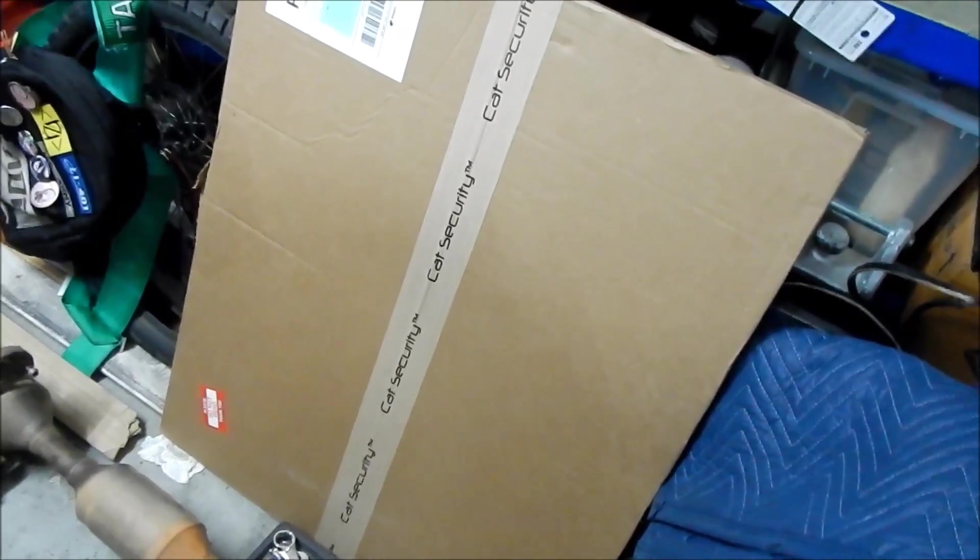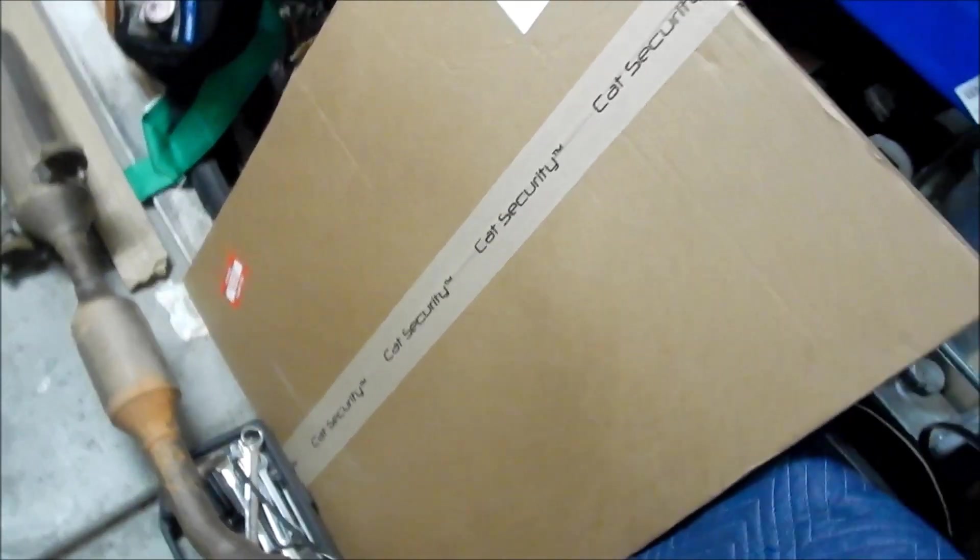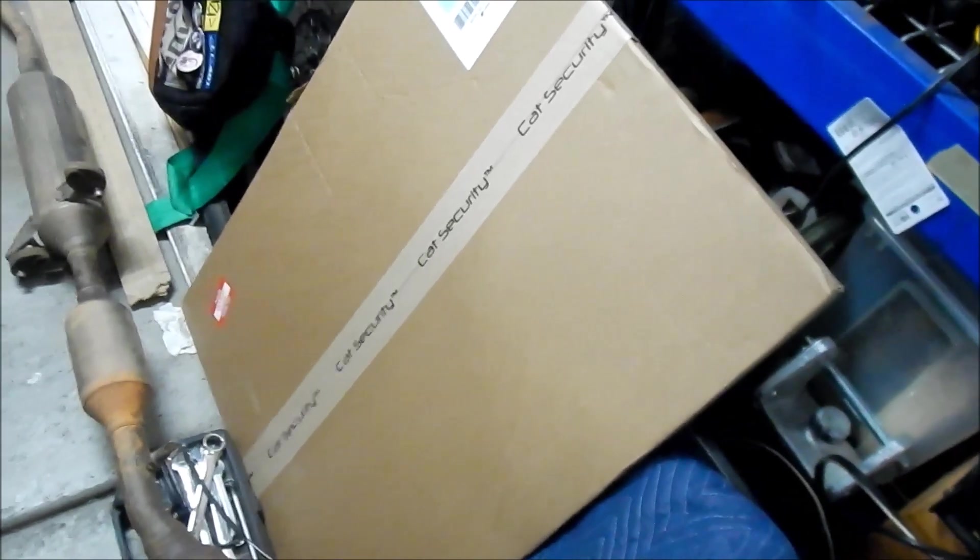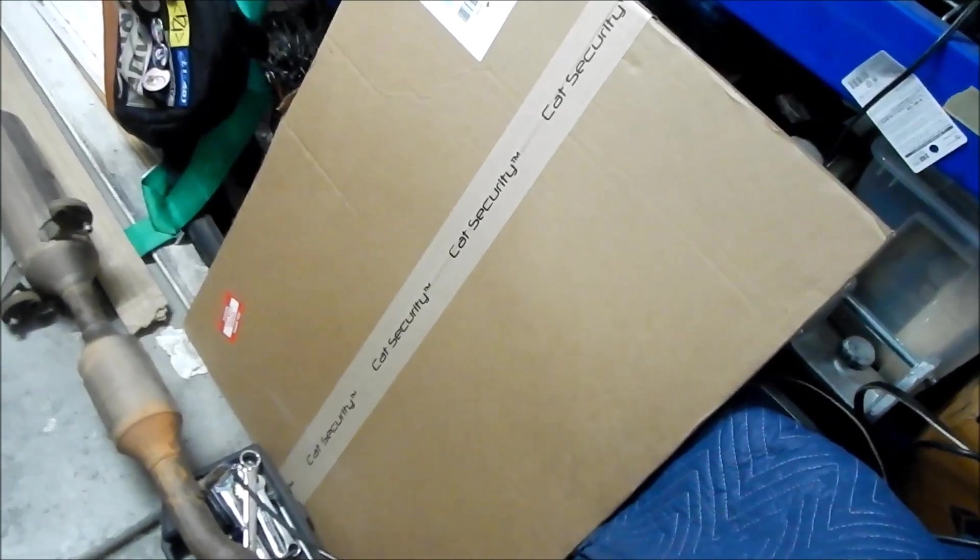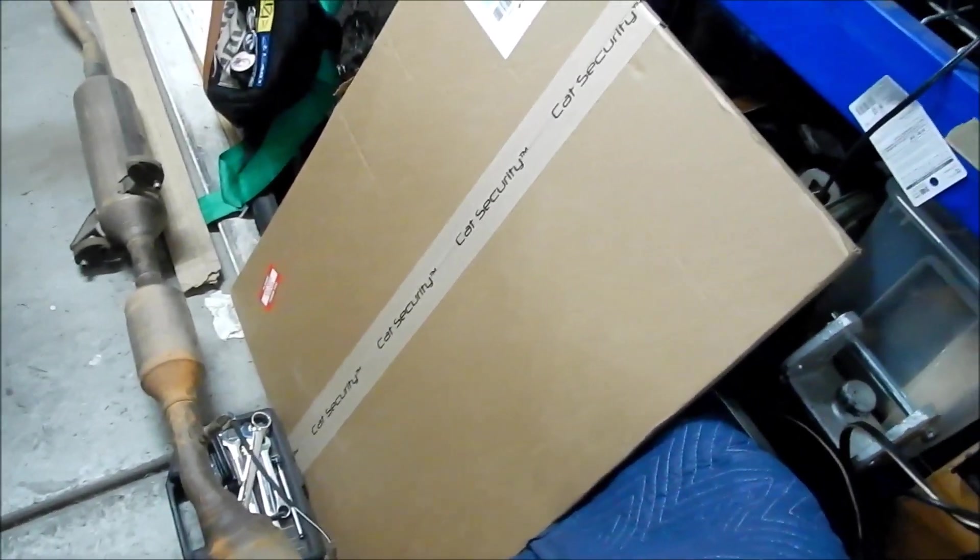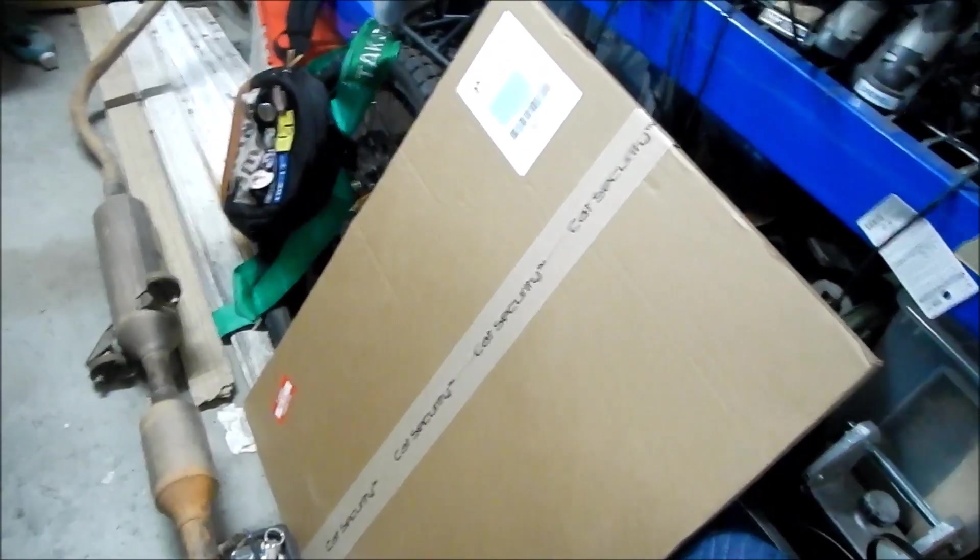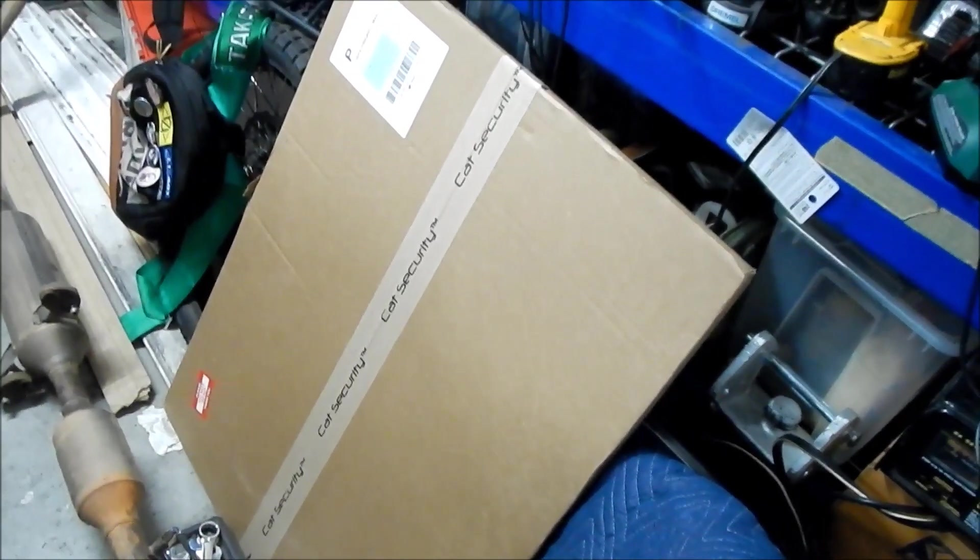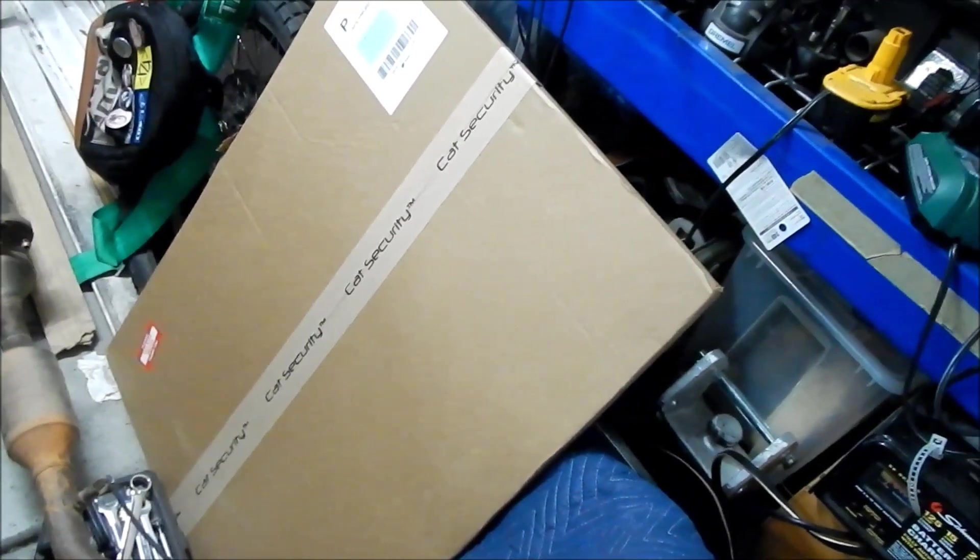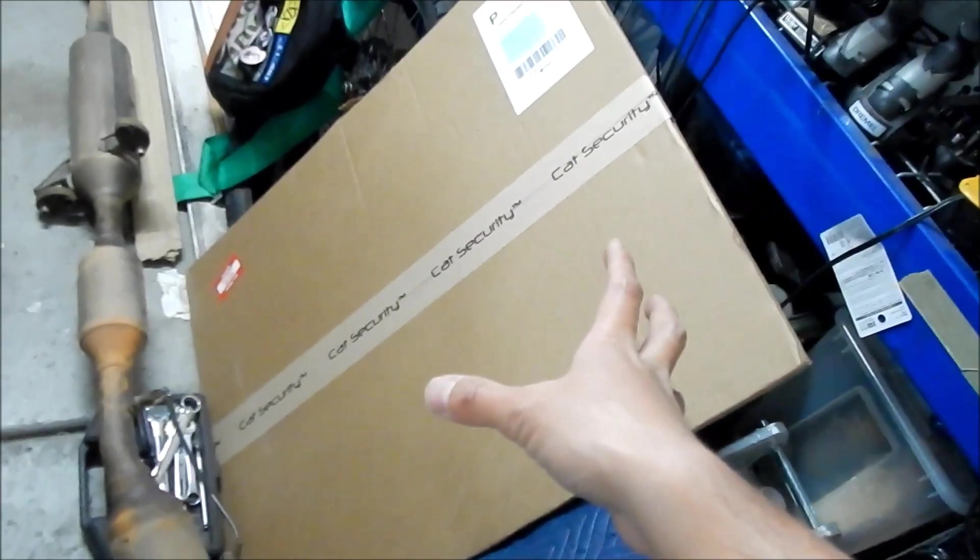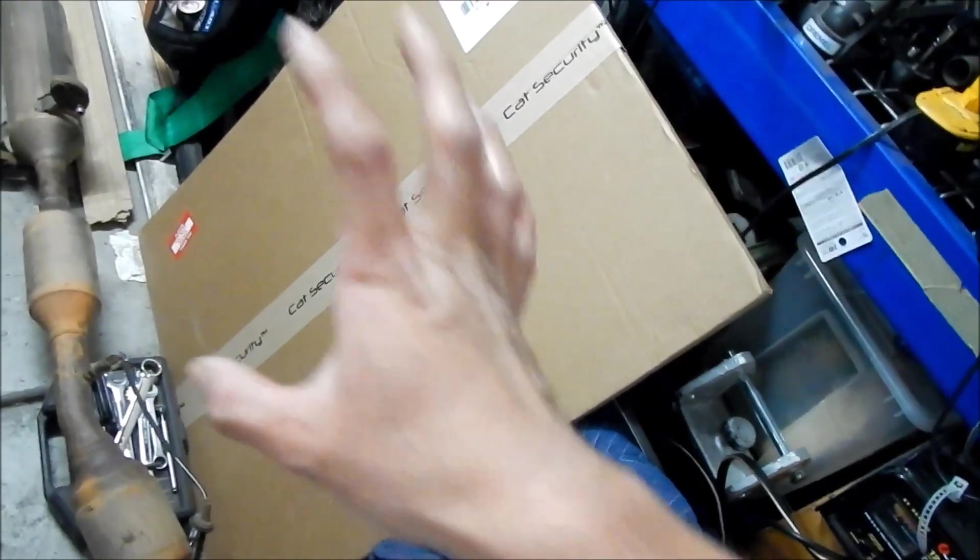So if you guys have been following my channel, I installed a cat security, a catalytic converter shield on my mom's third gen Prius. I, that's the one I actually drove to Fresno and it had it installed and I didn't have any problems with it at all. So I didn't hear any rattling, nothing. The car ran fine. So I install it right and it doesn't really affect the car all that much.